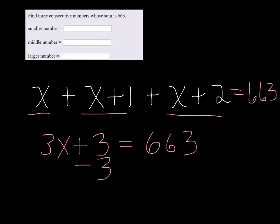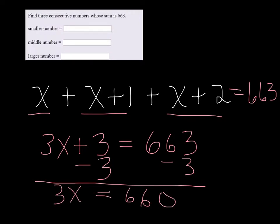We can subtract the 3 on both sides. So 3x equals 660. Divide both sides by 3, and we get 220.